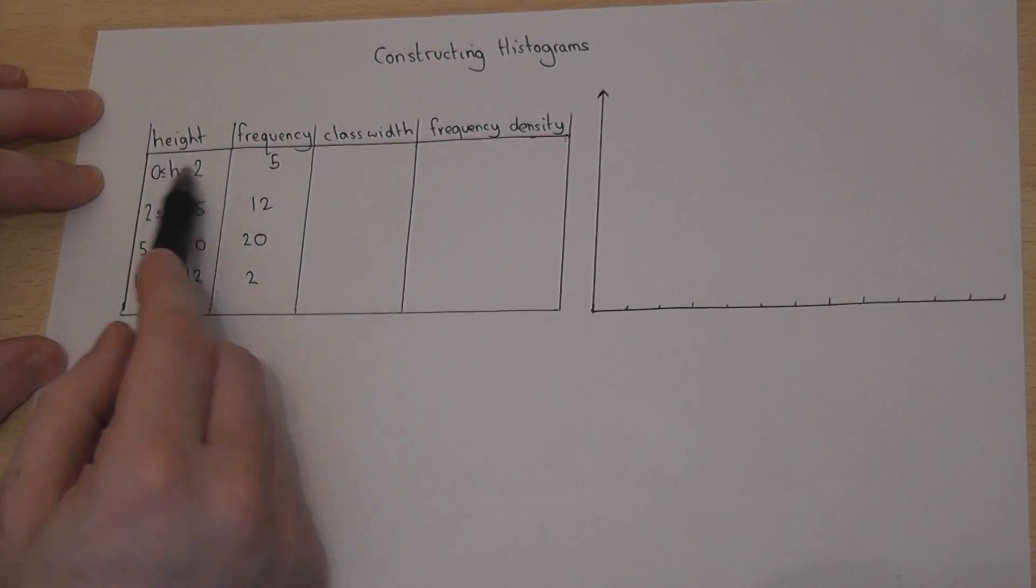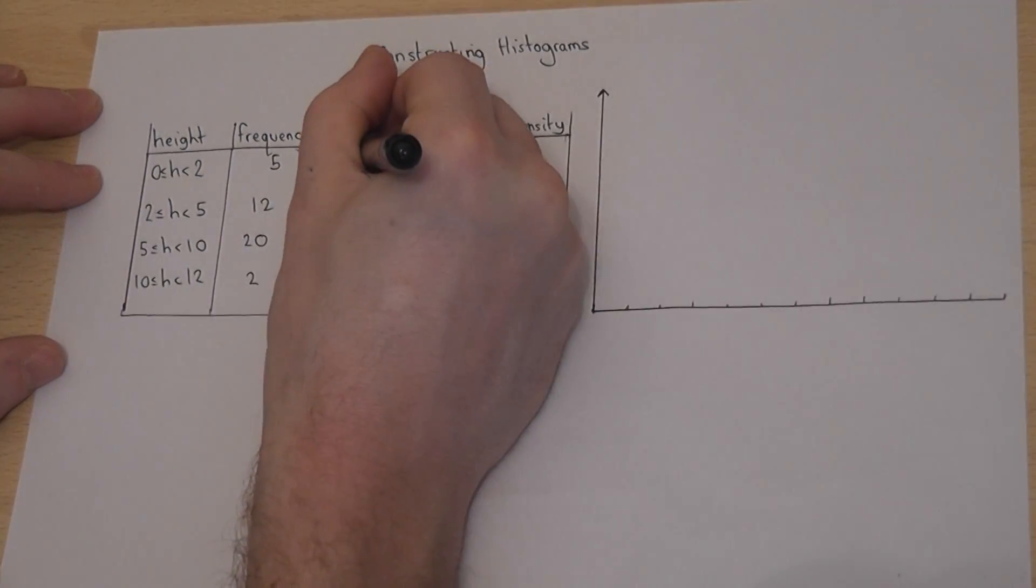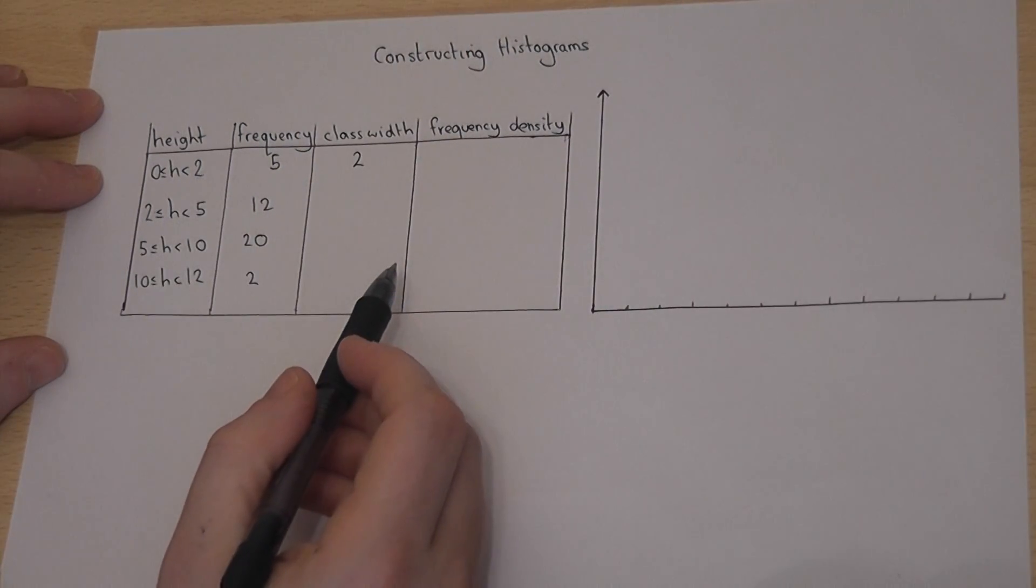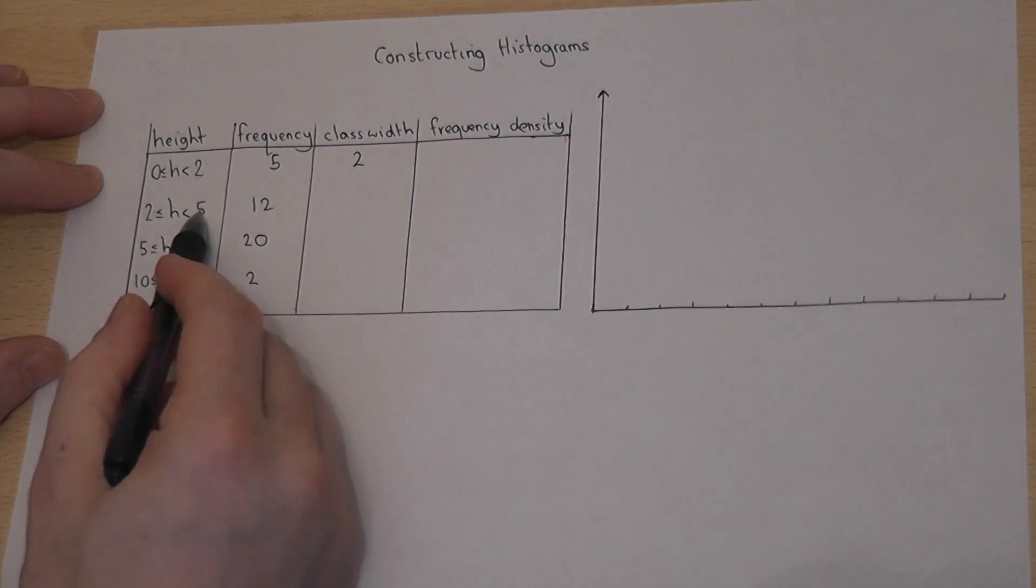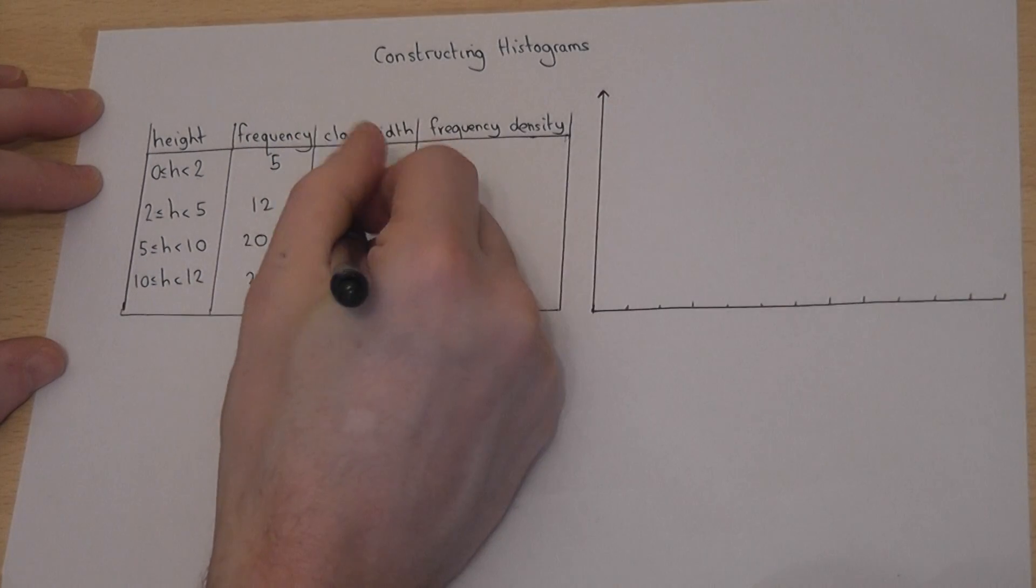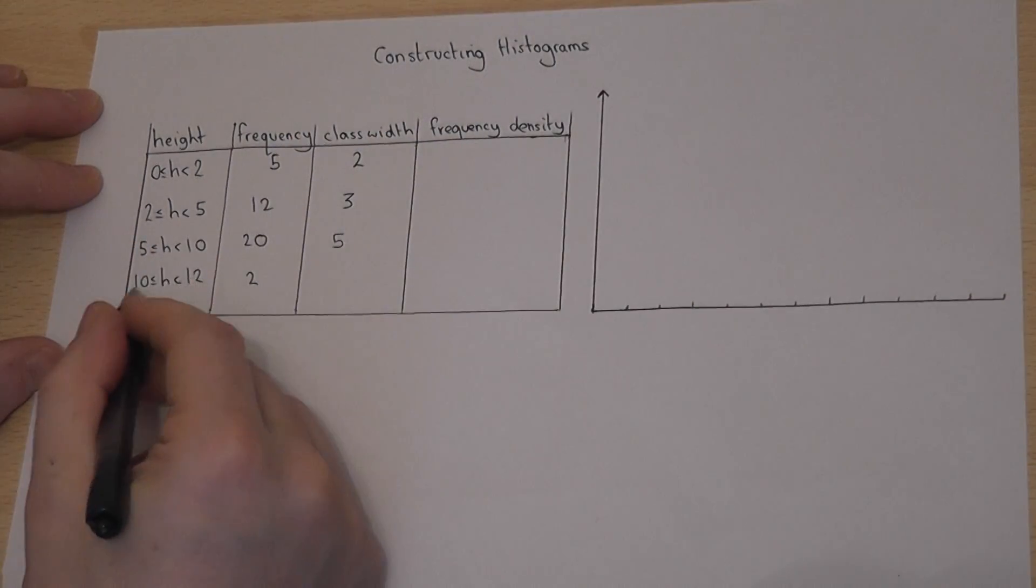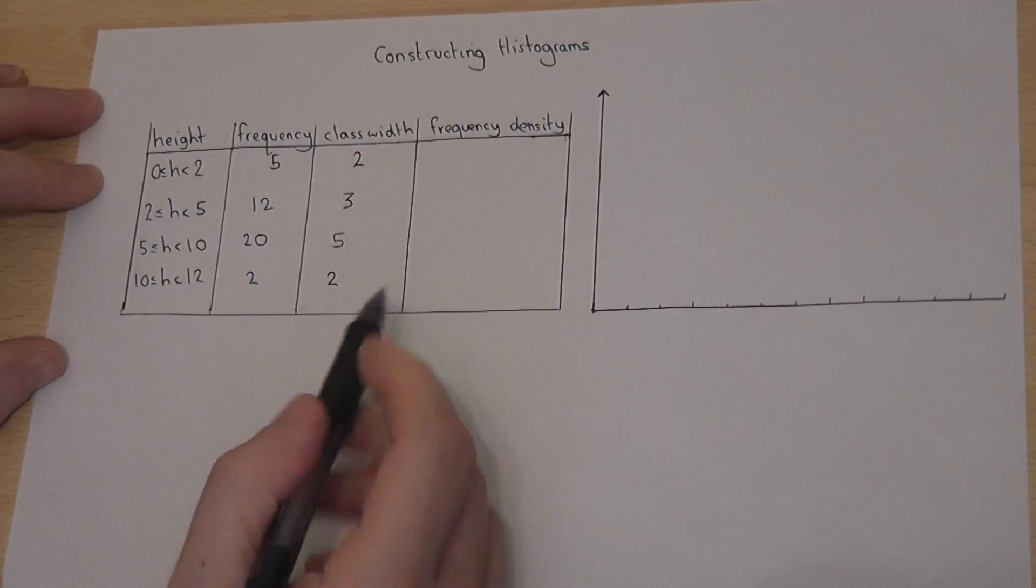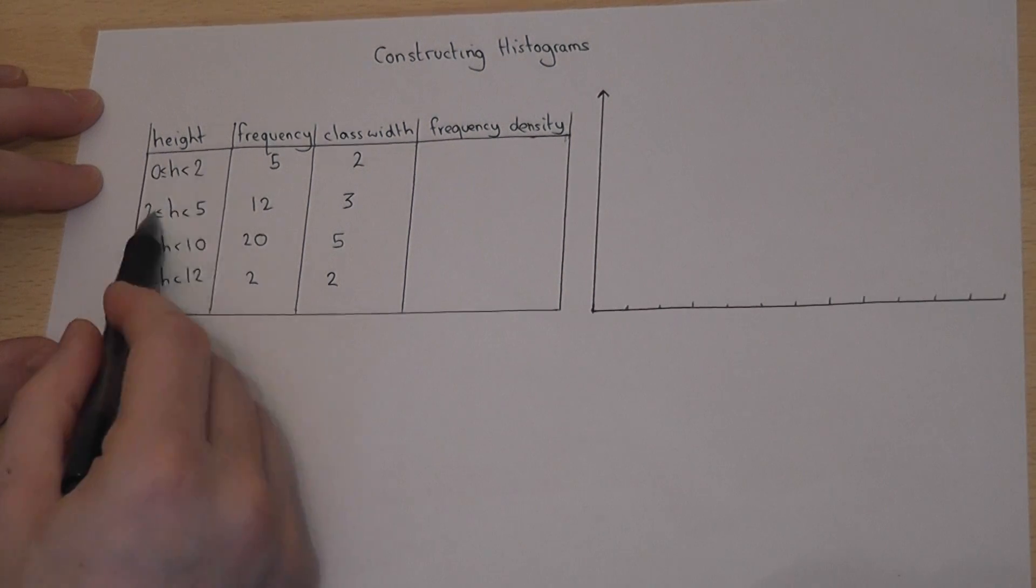The first one goes from 0 to 2, so 2 take away 0 is 2, so it's got a class width of 2. The second is 5 take away 2 is 3, then 10 take away 5 is 5, and 12 take away 10 is 2. So these are the widths of these classes.